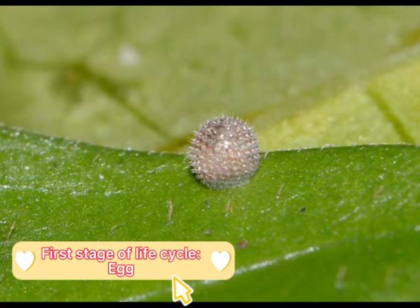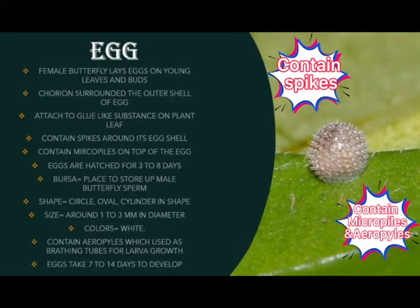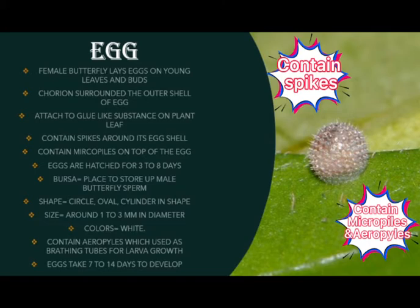This is known as a single-egg laying pattern, but in one day it can lay eggs up to 25 times. The first stage of holometabolous metamorphosis life cycle is the egg. The eggs can be found on young leaves and plant stems. The eggs of Parthenos sylvia are found under young leaves and buds. The chorion in the eggs protects the outer shell, and the eggs attach via a glue-like substance on plant limbs. The eggs contain spikes around the shell and micro-pores to allow water and air. The eggs are circular in shape, around 1–3 mm in diameter, and contain aeropyles which serve as breathing tubes for larval growth.